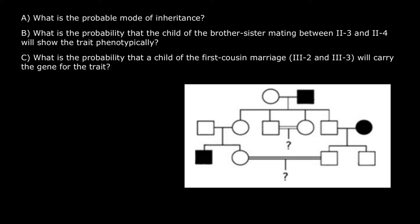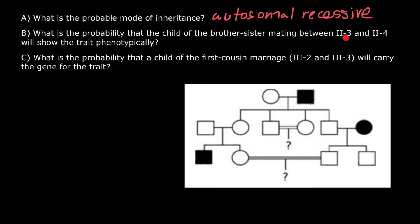So here's the answer for the first question: autosomal recessive. Question B: what is the probability that the child of the brother-sister mating between individuals II-3 and II-4 will show the trait phenotypically?